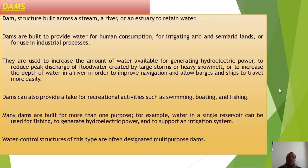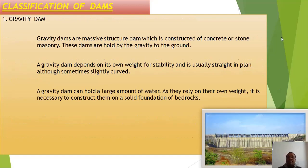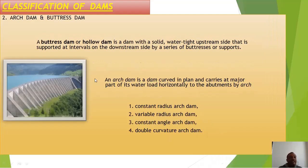Types of dams: First is the gravity dam — a massive structure constructed of concrete or stone masonry, held in place by the force of gravity. Second is the buttress dam, also called a hollow dam — a dam with a solid watertight upstream side supported at intervals on the downstream side by a series of buttresses.